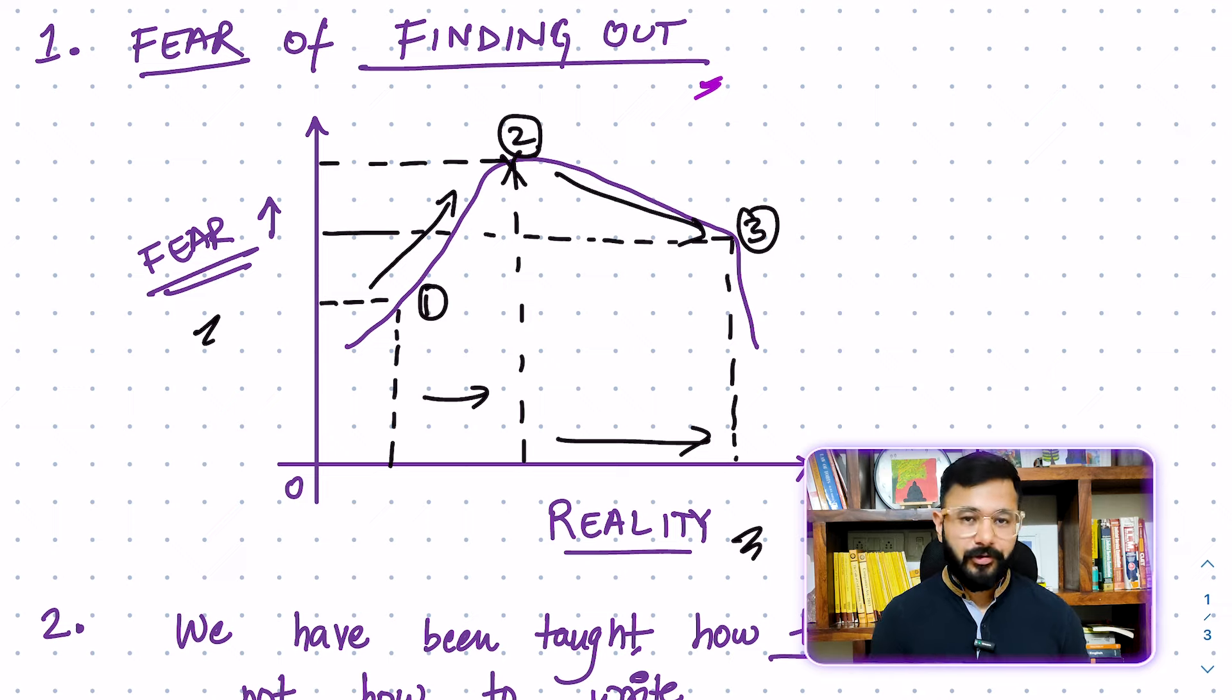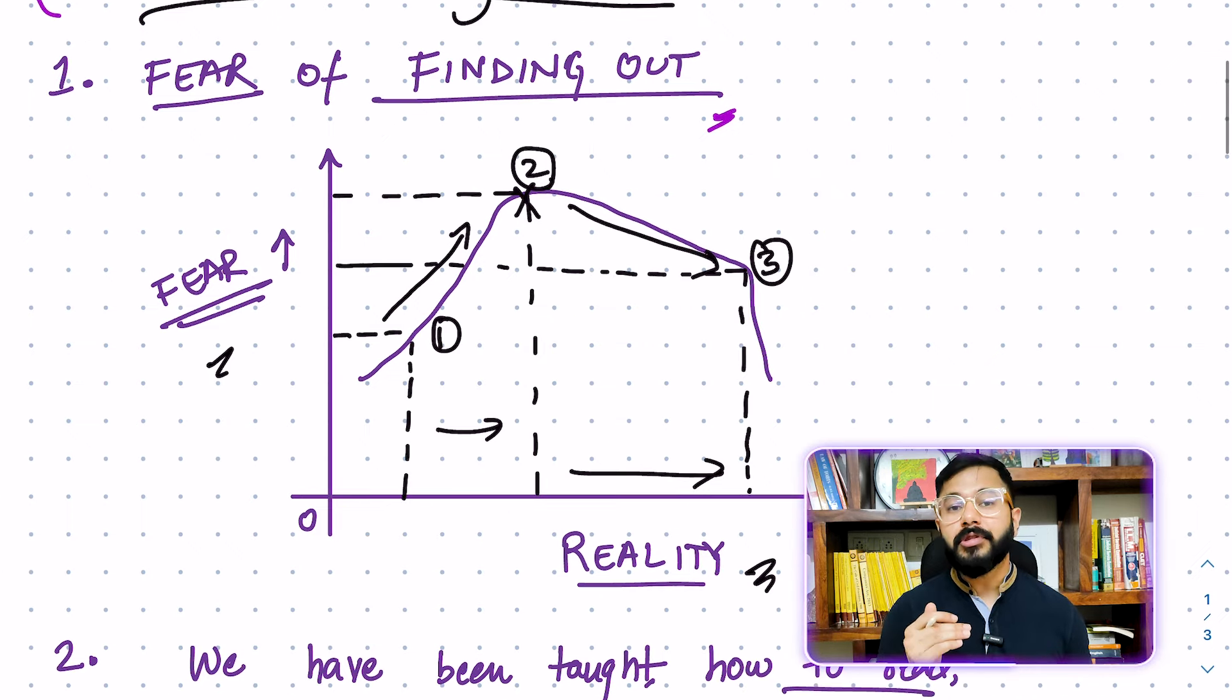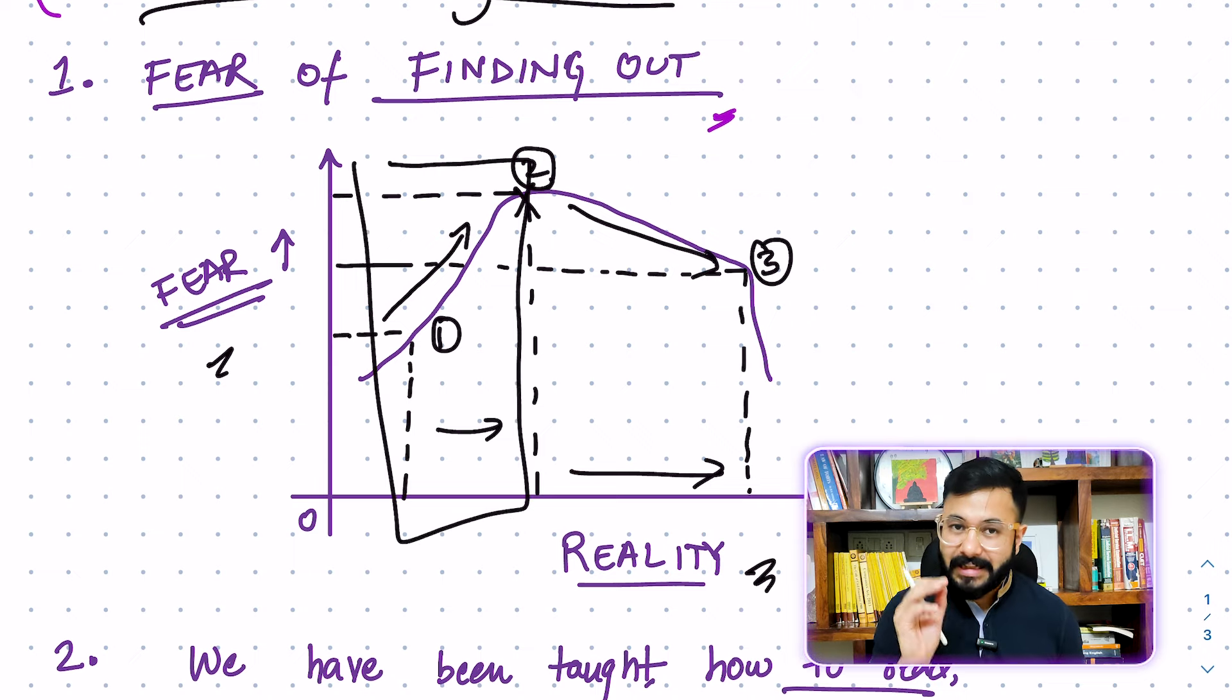It applies the same way in answer writing as well. When you actually start writing answers, you realize, you actually figure out the reality as to how good or bad you are at writing. And that makes you very uncomfortable. And that increases fear in your mind because you feel that you're not going to make it just because you're not good at answer writing. And so majority of us tend to drop answer writing between point one and point two because the fear is increasing.